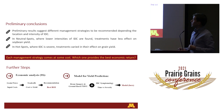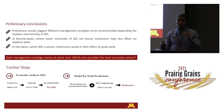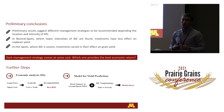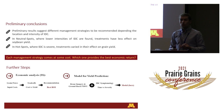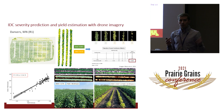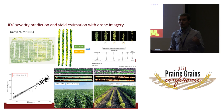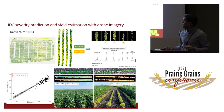Preliminary results suggest different management strategies should be recommended depending on the location of nitrogen and the intensity of IDC. In neutral spots with lower IDC intensity, treatments had a lower effect on soybean yield. In hotspot areas where IDC is severe, treatments vary greatly in their effect. We can manage IDC by increasing seeding rates, applying soy green, or planting a tolerant variety — but each strategy carries costs. Relating input costs and grain prices into our analysis will enable us to provide recommendations based on profitability and net income, which is what we'll be working on next.